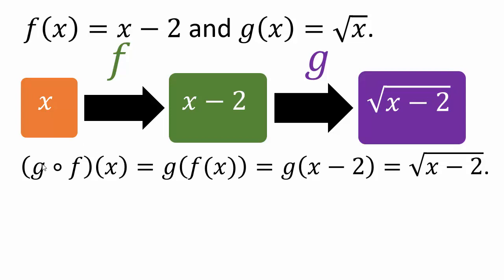The name is g with a little circle f, read as g composite f of x. What does it mean? It means g of f of x — f of x is the new input. You evaluate f of x, which is x minus 2, and put that as your input for g, giving you square root of x minus 2.